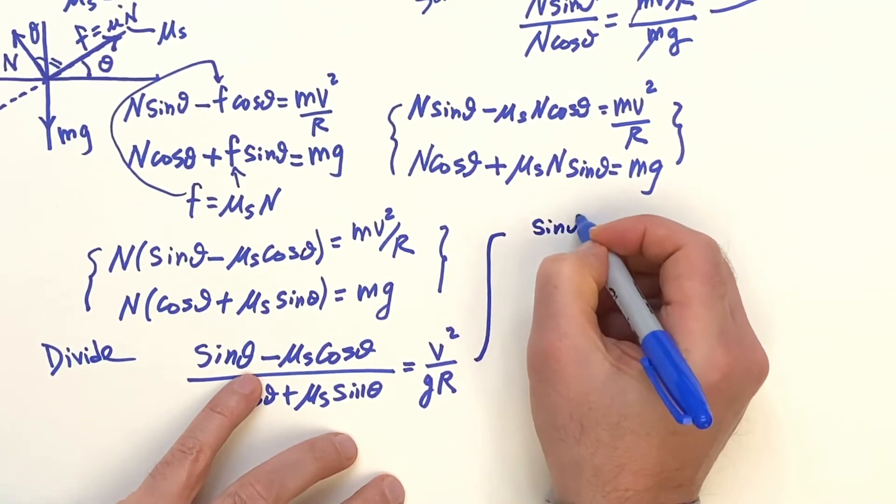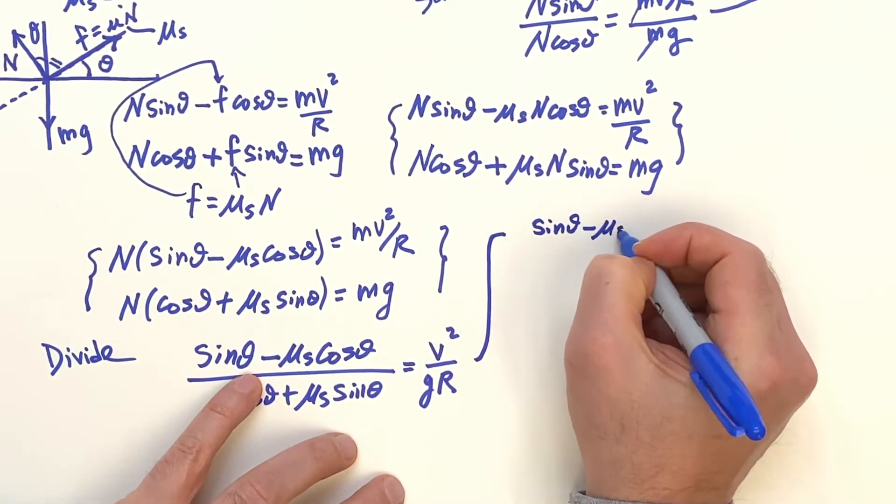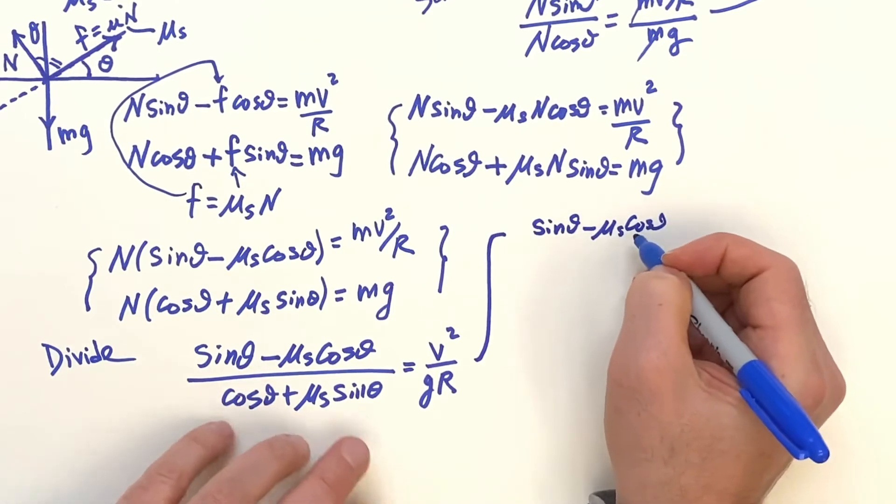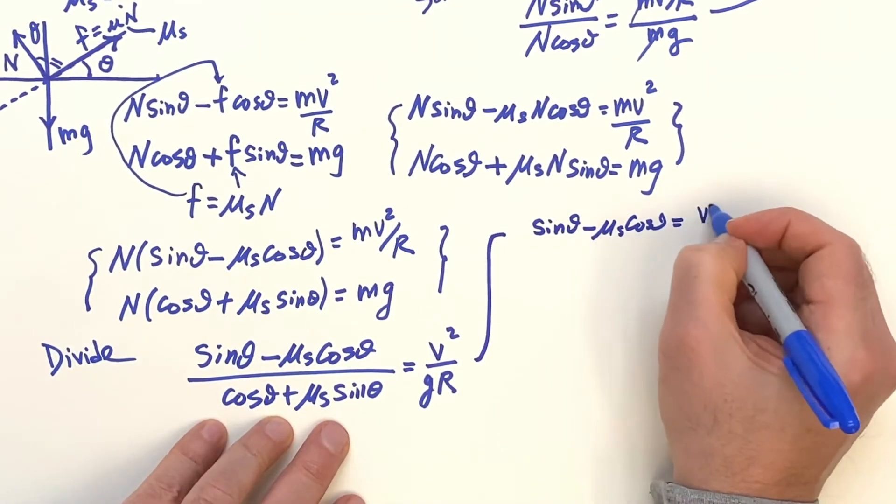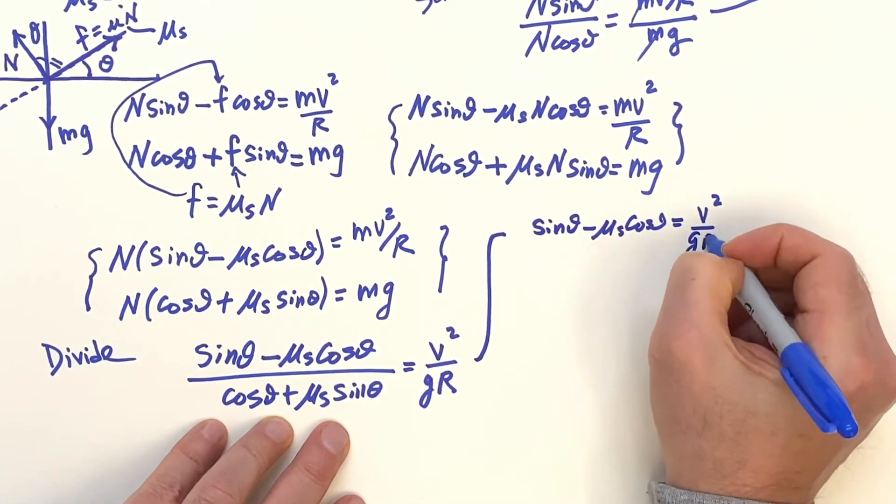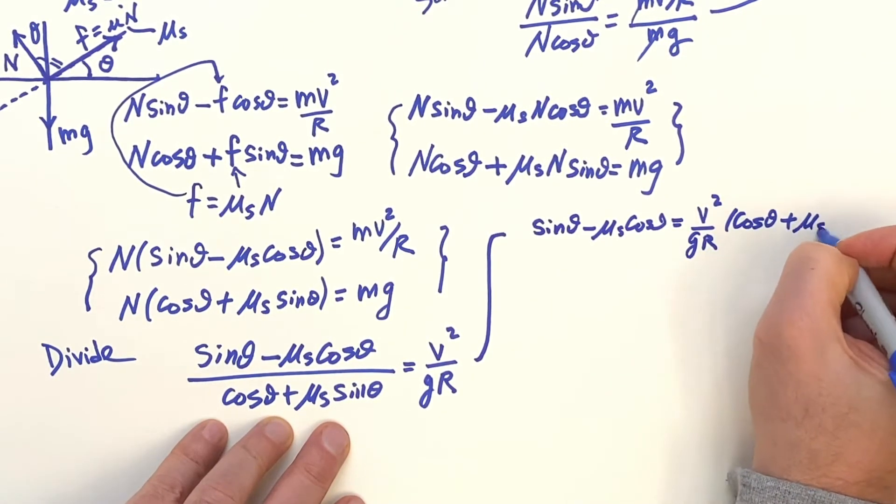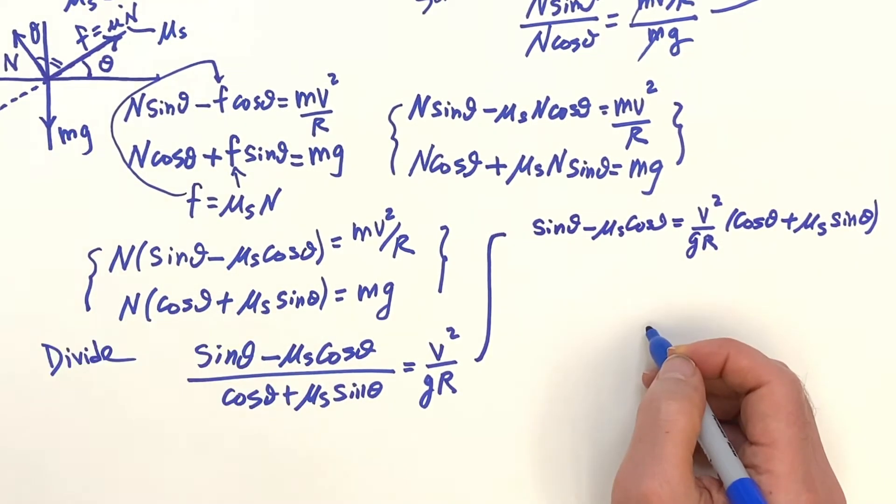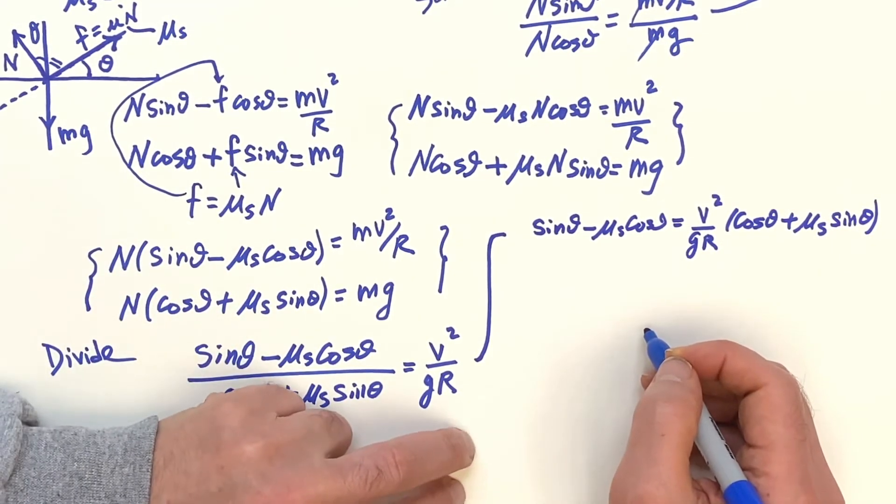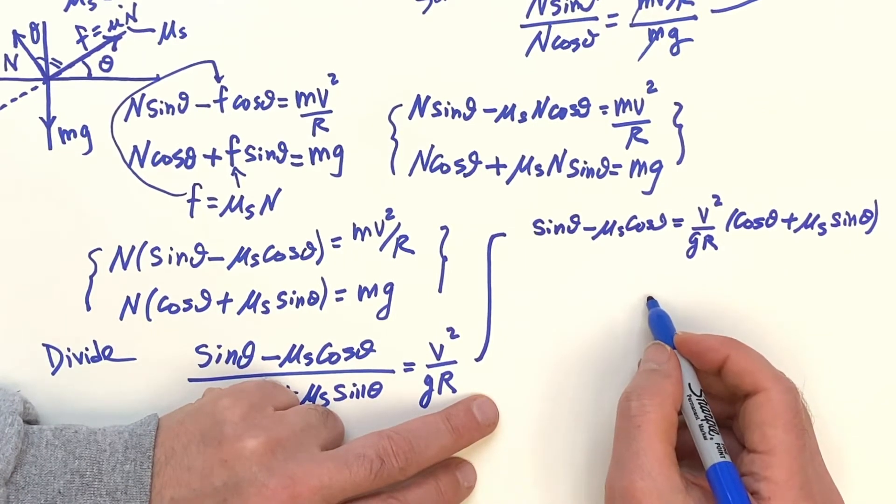So we have the sine of theta minus Mu, S, cosine of theta. I'm bringing this stuff on the right-hand side now. V squared over G, R times cosine of theta plus Mu, S, sine of theta. And really, really have to work stuff out here.